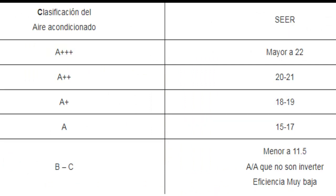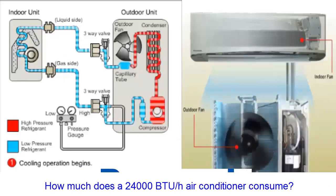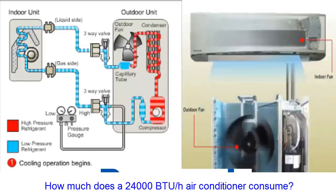To calculate this average current value, knowing the SEER — Seasonal Energy Efficiency Ratio — value is necessary. The SEER parameter is measured under various working conditions, with the same room temperature, but varying the outdoor ambient temperature from 18 degrees Celsius (65 degrees Fahrenheit) to 40 degrees Celsius (104 degrees Fahrenheit).